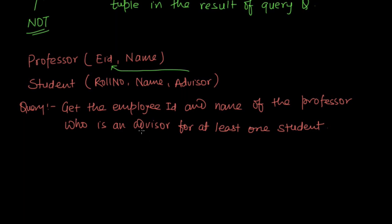The query is: get the employee ID and name of the professor who is an advisor for at least one student. Let's add one more constraint — the professor must be an advisor for at least one female student.